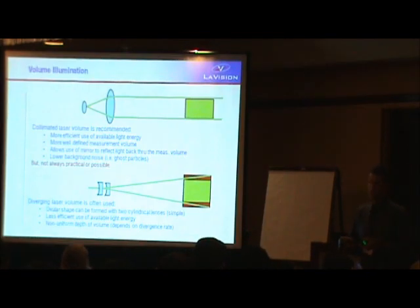Now, how do you configure—looking at just lasers now—how do we configure this, your measurement volume? The recommended setup, if you can achieve it, is to collimate, so expand your beam and then collimate to form a more or less parallel sheet, thick sheet. This has an advantage that it more efficiently uses all the available light that you have coming out of your laser.